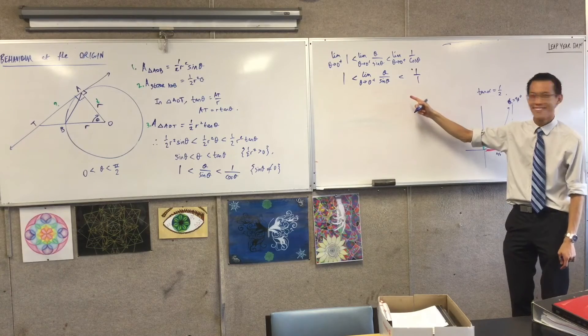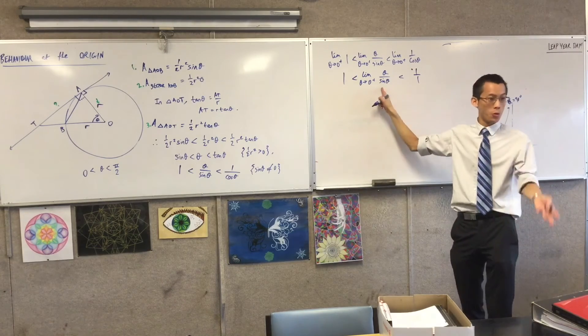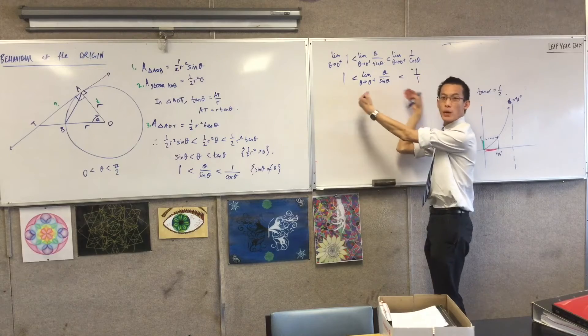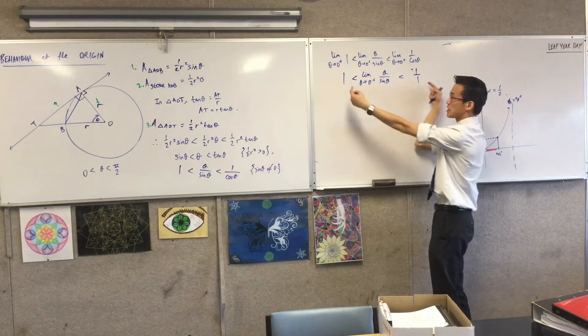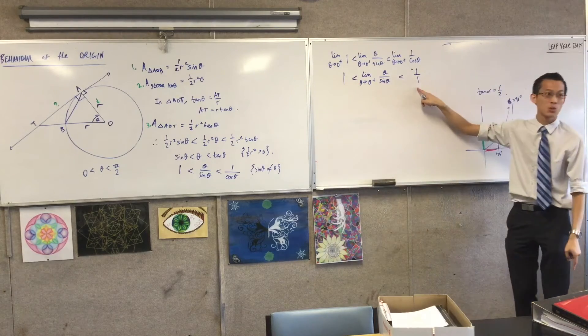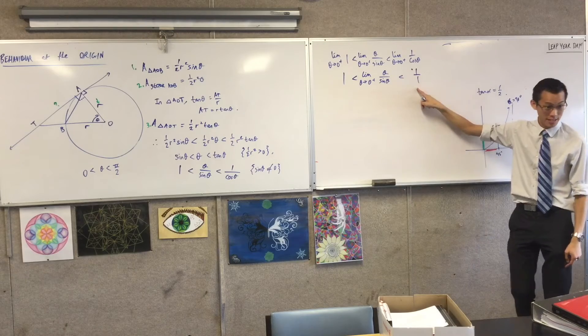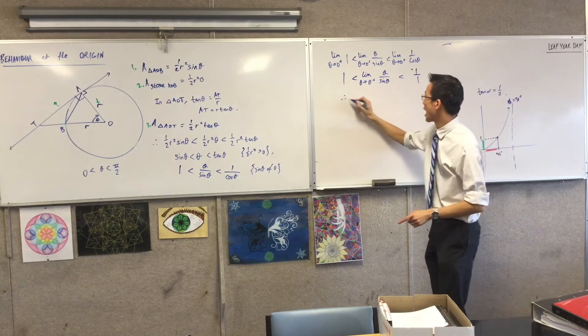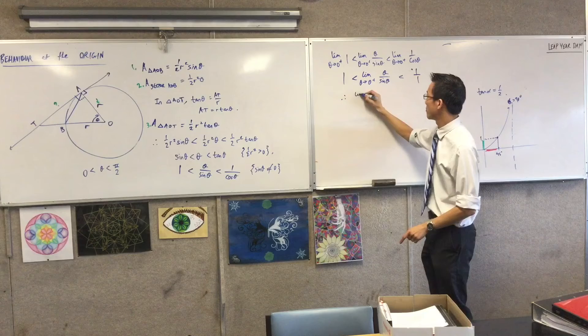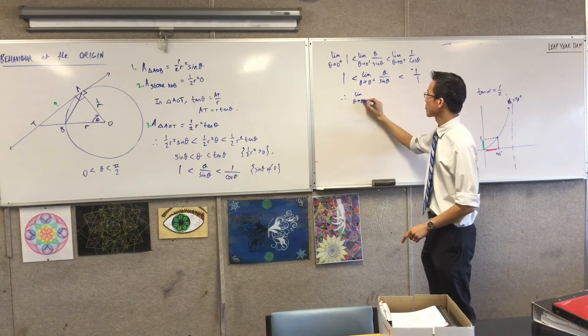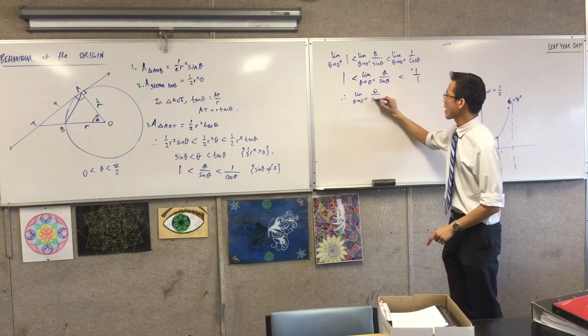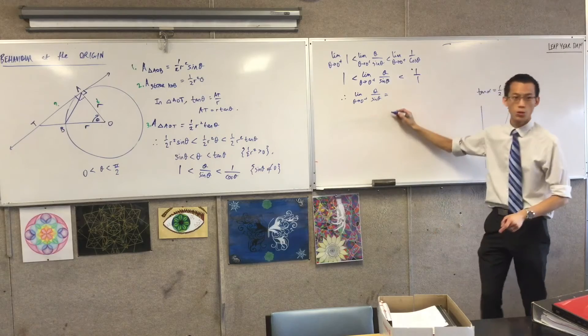Now look at this. Hold on. What just happened? I have something unknown, but I know it's being squeezed between - we've done this before - it's being squeezed between these two things that look to me like they're the same. So therefore, I can say this guy here, this ratio, is equal to 1.